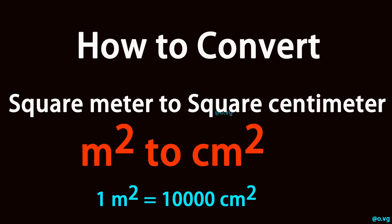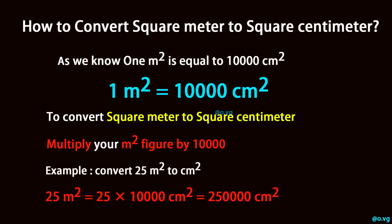How to convert square meter to square centimeter. As we know, one square meter is equal to 10,000 square centimeters.